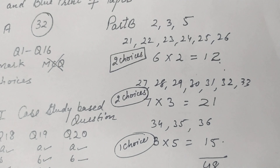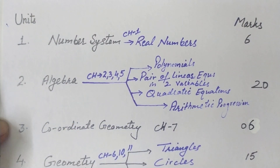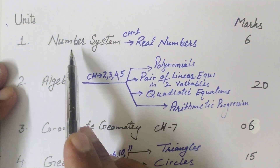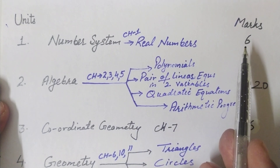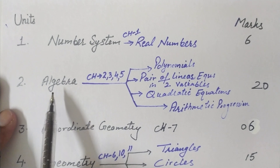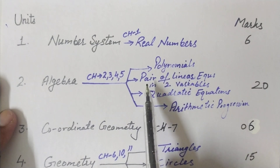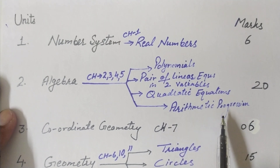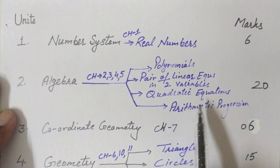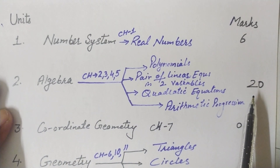Now let's discuss the blueprint. The full book is divided into seven units. Unit 1 is Number Systems — Chapter 1 Real Numbers — worth 6 marks. Unit 2 is Algebra — Chapters 2 (Polynomials), 3 (Pair of Linear Equations in Two Variables), 4 (Quadratic Equations), and 5 (Arithmetic Progression) — worth 20 marks.